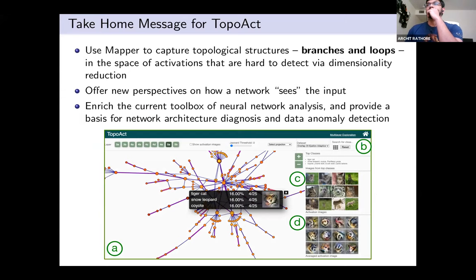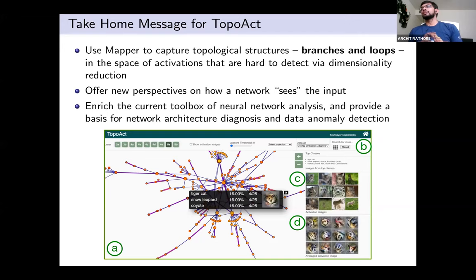The take-home message for our tool, which we call TopoVAC, is to use the mapper algorithm to capture topological structures — specifically branches and loops — in the space of activation vectors. These may or may not be visible using classic dimensionality reduction. This method is a new way of understanding how the network sees whole point clouds as a single entity rather than inspecting individual activation vectors.